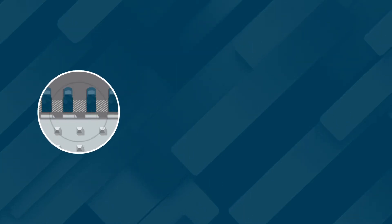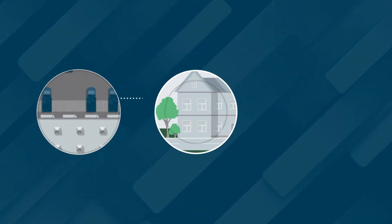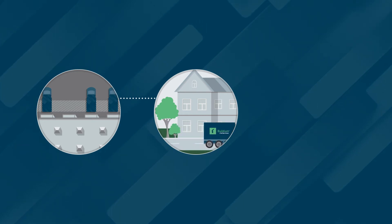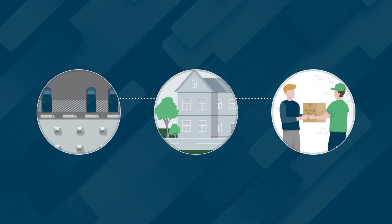Think of an OpenAPI as a courier. There are items you can order from a catalog, and the courier will deliver them to your home from the warehouse. This is called reading data.